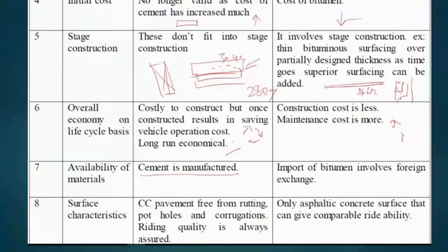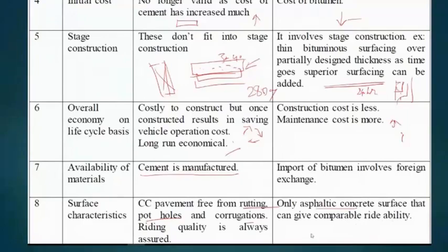For surface characteristics, cement pavement is free from rutting, potholes, and corrugations, and riding quality is always assured in rigid pavement. In flexible pavement, asphalt concrete can provide good riding quality, but there may be chances of settlement and crack formation, so riding quality cannot be assured for a longer period.